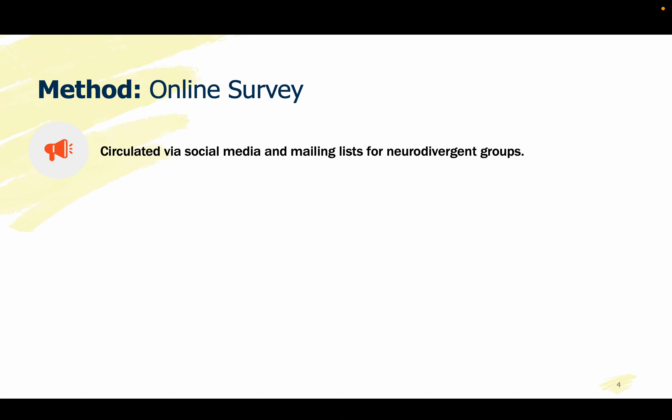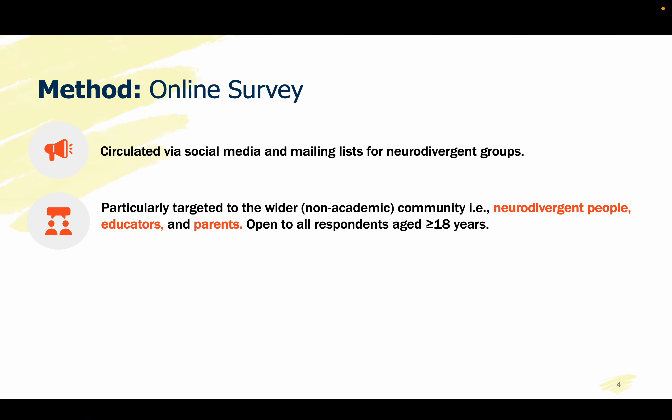To this end, we circulated an online survey on social media and mailing lists for neurodivergent groups. The survey was particularly targeted to the wider non-academic community, which we defined to include neurodivergent people, educators, and parents, but it was open to anyone over the age of 18.